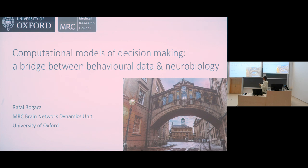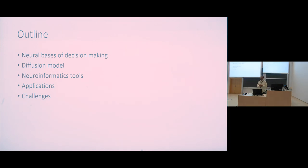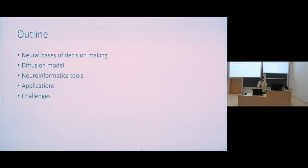These models can also form a bridge between behavioral data and neurobiology. I will start with a brief review of the neural basis of decision making, and then I will present the most influential model of choice process called the diffusion model. I will highlight the importance software tools played in making the diffusion model widely used and accessible, present two recent applications of this model, and if there is time, discuss challenges.